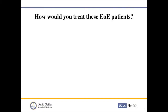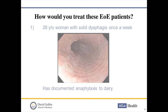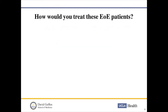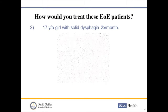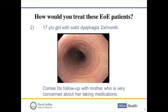Before we talk about the three therapies, I want to pose three patients from my practice. The first case is a 28-year-old woman who experiences dysphagia to solid foods once a week. When you scope her, you see the classic features of EOE — the linear furrows and the circular rings. A key feature is that she already has a documented anaphylactic response to dairy products. Case two is a 17-year-old girl with solid food dysphagia twice a month and a pretty similar endoscopic appearance, who comes with her mother who is very concerned about her having to take medications.